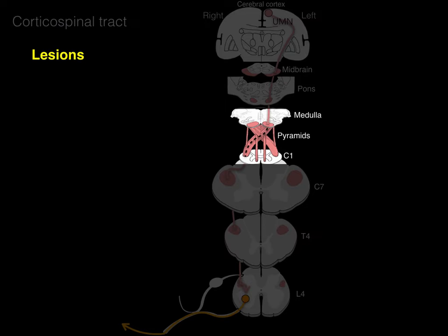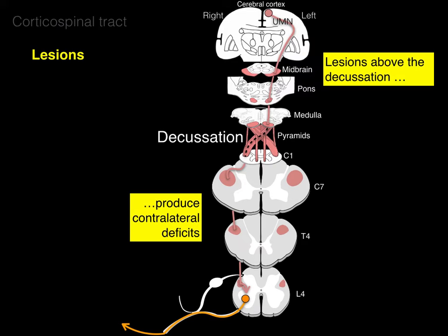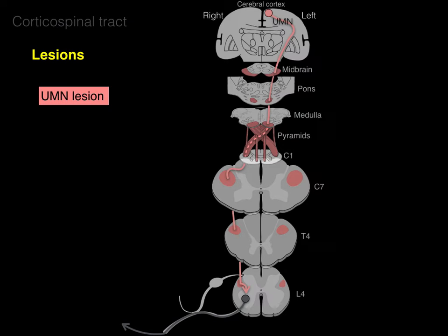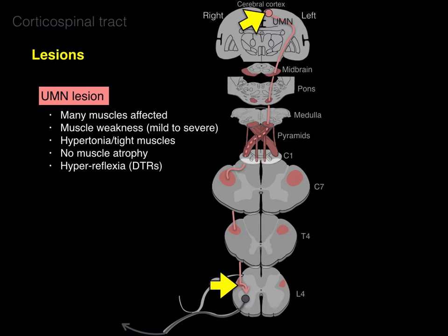Let's talk about lesions. Decussation occurs at the pyramid, so lesions above the decussation produce contralateral deficits, whereas lesions below the decussation produce ipsilateral deficits. An upper motor neuron lesion — anywhere from the cerebral cortex down to the white matter of the spinal cord — produces effects on many muscles below the level of lesion, resulting in muscle weakness from mild to severe or paralysis. Upper motor neuron lesions cause hypertonia — very tight muscles — with little or no muscle atrophy, and hyperreflexia of deep tendon reflexes.